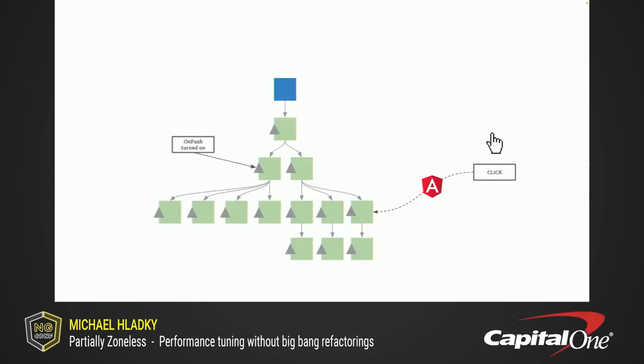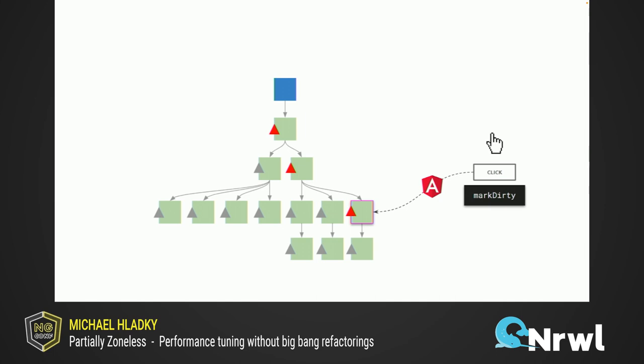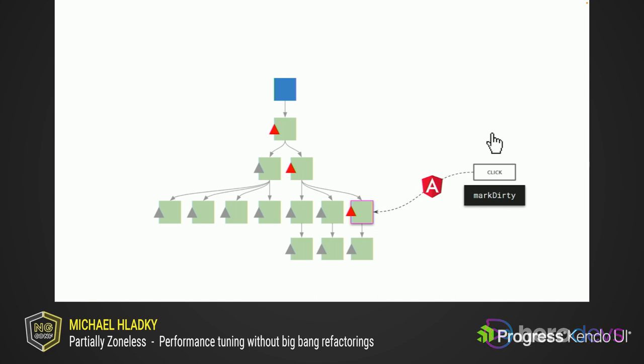If you interact with one of those components — assuming every single component has change detection on push enabled — a process is started that is called dirty marking, where from the very component you interacted with, up to the top, you mark all the components with a flag that tells Angular that if there is a re-rendering, those components with the red triangle need to get redrawn, re-rendered, re-evaluated. And this is everything Angular does — nothing else.